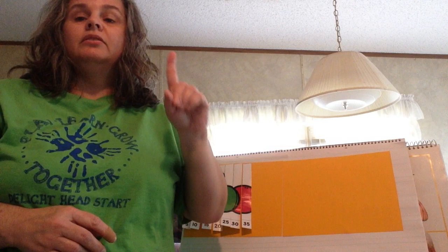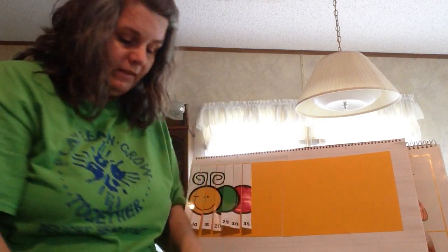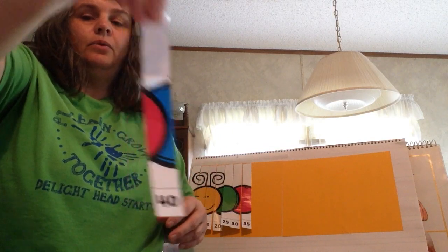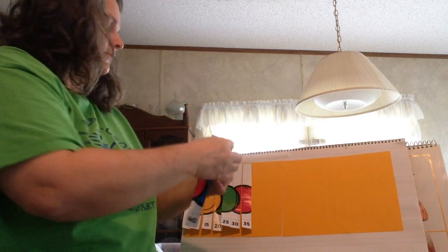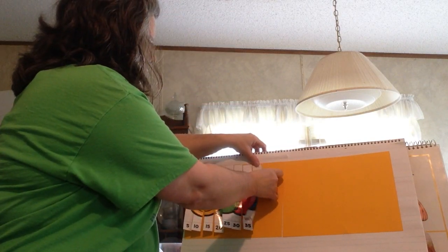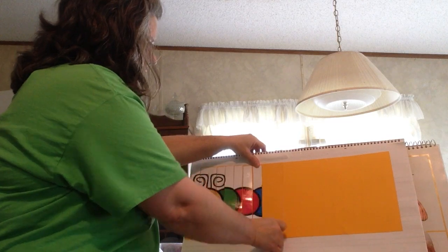35. Then you have 35, 36, 37, 38, 39, 40. So the next number is 40. A 4 and a 0 make 40.